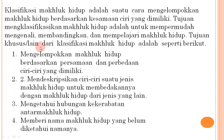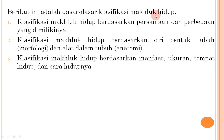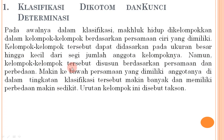Tujuan khusus klasifikasi makhluk hidup adalah: pertama, mengelompokkan makhluk hidup berdasarkan persamaan dan perbedaan ciri-cirinya; kedua, mendeskripsikan ciri-ciri suatu jenis makhluk hidup untuk membedakannya dengan jenis lain; ketiga, mengetahui hubungan kekerabatan antar makhluk hidup; keempat, memberi nama makhluk hidup yang belum diketahui namanya. Dasar-dasar klasifikasi meliputi persamaan dan perbedaan, ciri bentuk tubuh morfologi dan anatomi, serta manfaat, ukuran, tempat hidup, dan cara hidupnya.